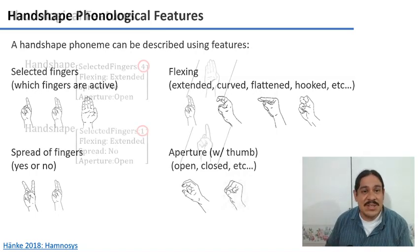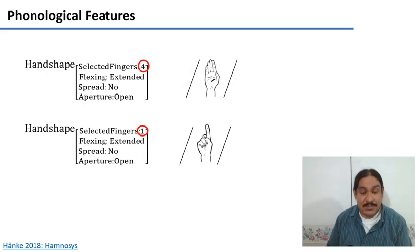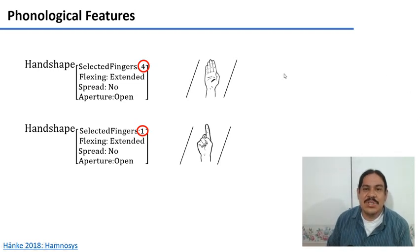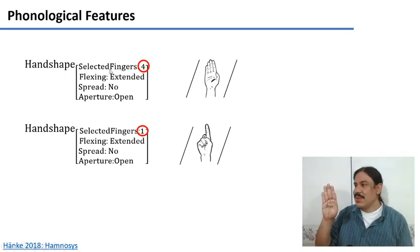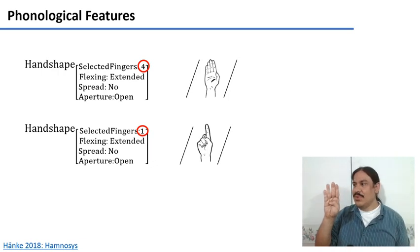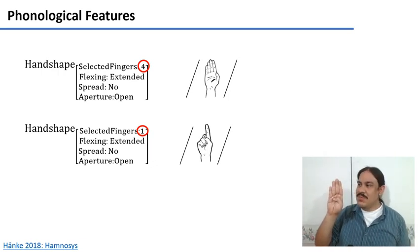So as you can see, these will be features of a phoneme. If a sign language has these two phonemes as possible hand shapes, then this hand shape could be described with these four features: having four selected fingers, with extended flexion, with no spread, and with aperture relative to the thumb, because it's not closed.